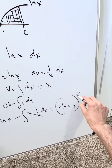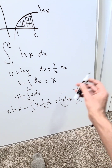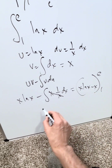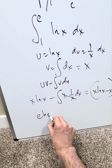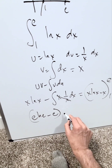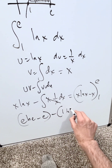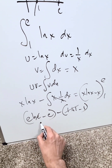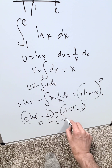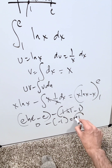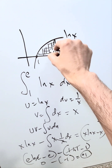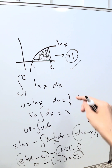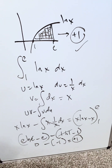But now let's bring in the limits — upper limit e, lower limit 1. To determine that area, I'll plug in the e, then I'll plug in the 1, the difference of the two. e·natural log e minus e — that's the upper limit. Lower limit: 1·natural log 1 minus 1. Natural log 1 is 0, it goes away. Natural log e is 1. e minus e is 0, minus minus 1, giving a positive 1. This area right over here is going to be equal to 1.